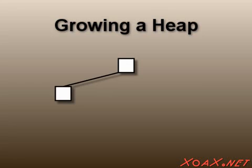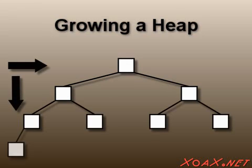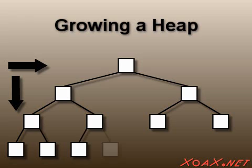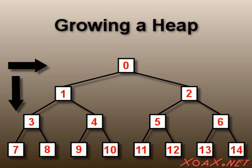The root of the tree is the first element. Then we add elements from left to right, going top to bottom, until we have added all the elements. For clarification, the order in which we add the elements is given by these integers, beginning at zero.